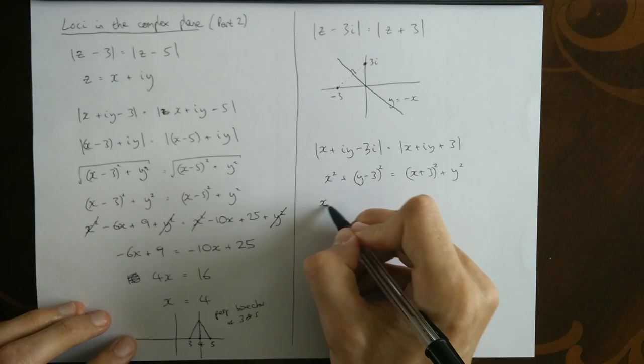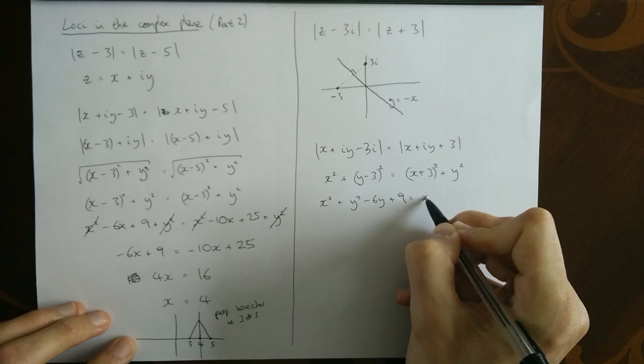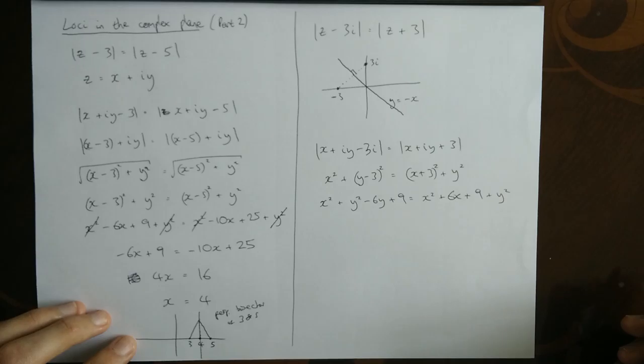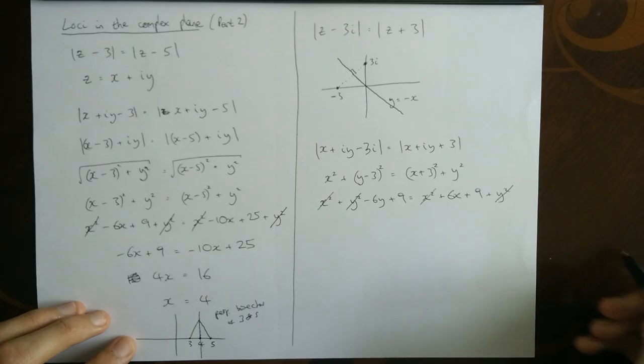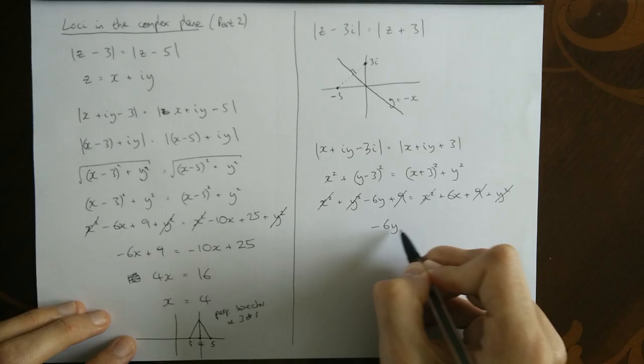So now I'm going to expand these brackets. And then I'm going to cancel terms. So we can cancel this x squared with this x squared. And cancel this y squared with this y squared. And this 9 with this 9, you know, loads is going.